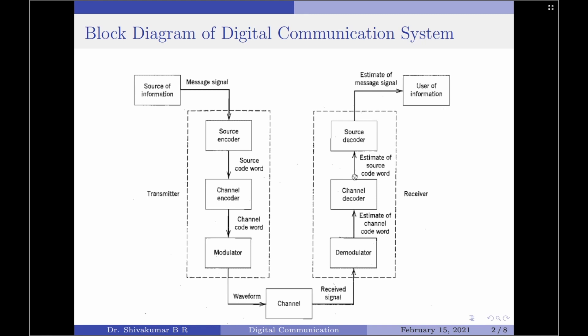The second coding technique is called convolutional coding. Here the information bearing message stream is encoded in a continuous fashion by continuously interleaving information bits and the error control bits. The channel decoder recovers the information bearing bits from the coded binary stream. Error detection and possible error correction is also performed by the channel decoder.